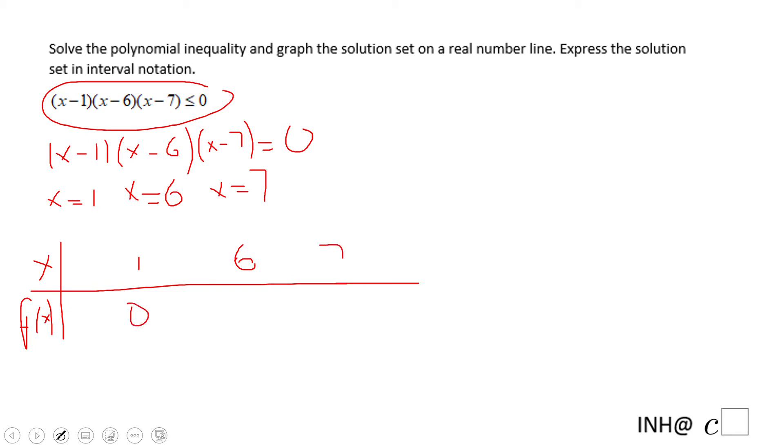The first number I'm going to use for finding the sign of f of x will be zero. If you plug zero in this factor form you're going to end up with a negative one times a negative six times a negative seven, but a product of three negative numbers means this will be negative.